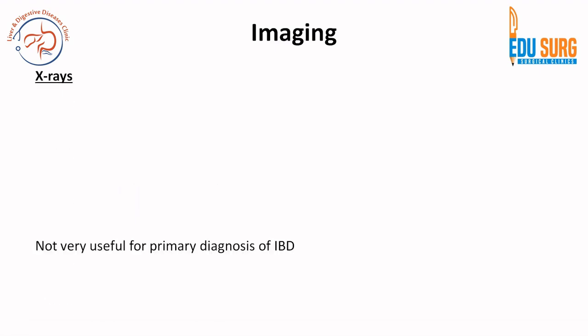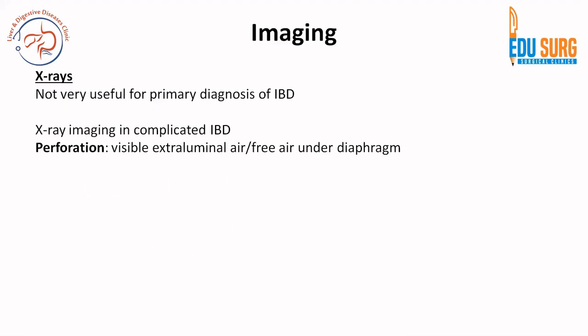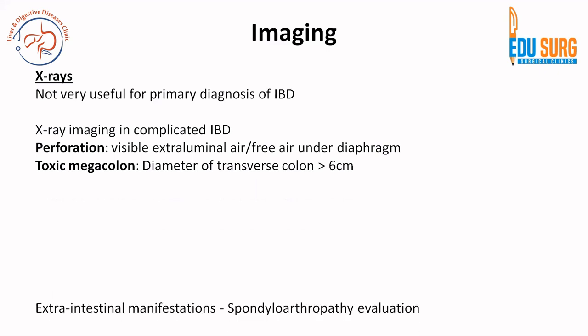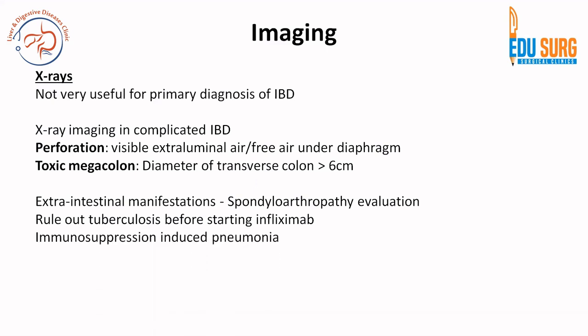Moving to imaging: X-rays are not very useful for primary diagnosis. However, X-ray can help in complicated IBD — perforation will be seen as free air under the diaphragm, toxic megacolon with transverse colon diameter more than 6 cm, and extra-intestinal manifestations such as spondyloarthropathy can be seen. Chest X-ray can be done to rule out tuberculosis before starting infliximab or to rule out immunosuppression-induced pneumonia.